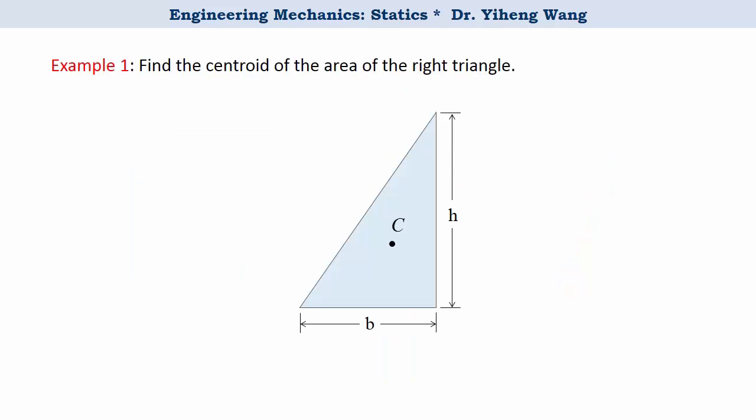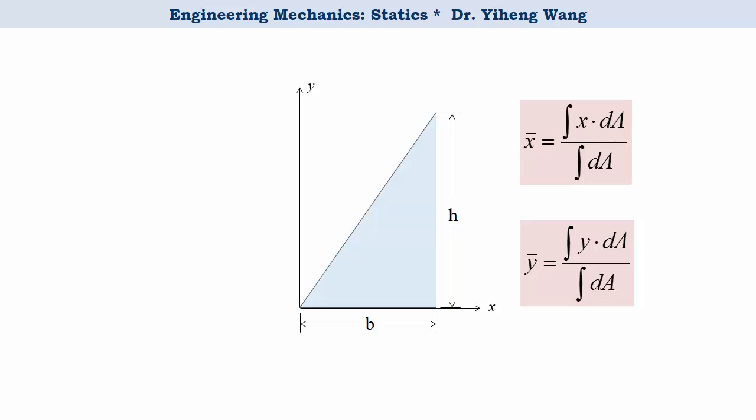So let's look at this example, finding the centroid location for a right triangle with base of b and height of h. I will demonstrate this problem using two different approaches. First of all we need to put this triangle into an x-y coordinate system, so that we can apply these two equations to find the centroid location. Since in these two equations x and y represent the coordinates of an arbitrary point x-y in this triangle, let's define a differential element at this location with sides of dx and dy. Therefore the area of the differential element dA equals dx times dy.